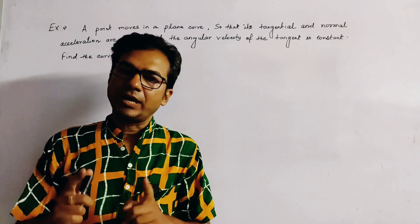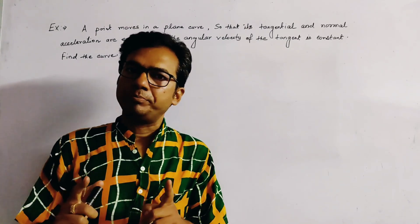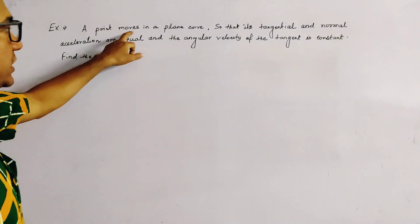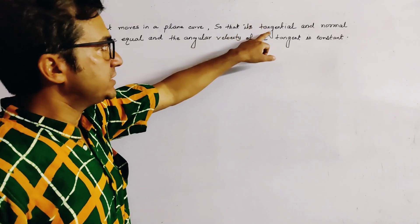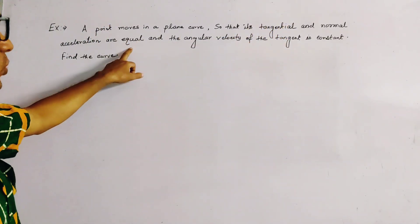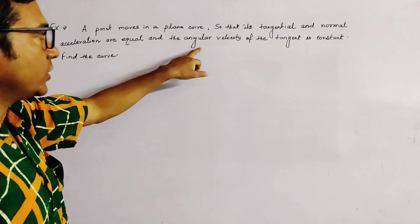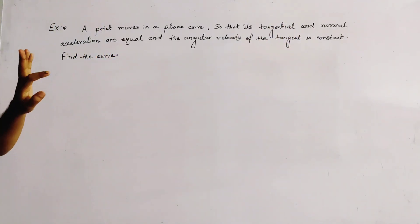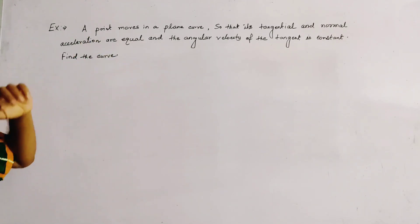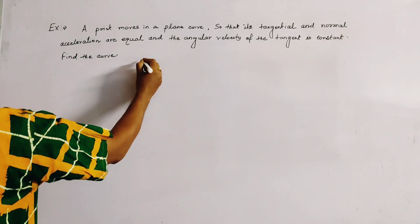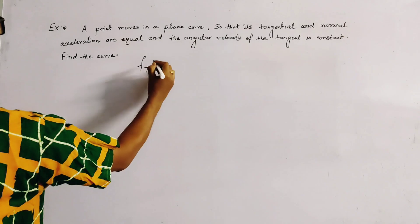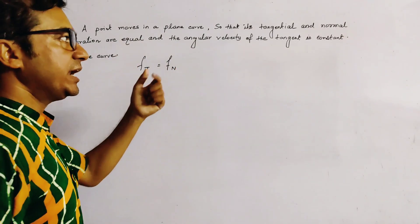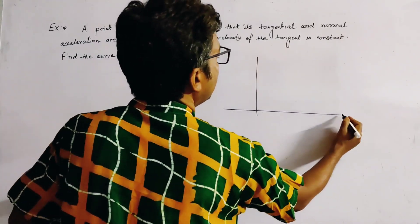This problem is on tangential and normal acceleration of a particle. A point moves in a plane curve such that its tangential and normal accelerations are equal, and the angular velocity of the tangent is constant. We have to find the equation of the curve. It is given that tangential acceleration Ft equals normal acceleration Fn.